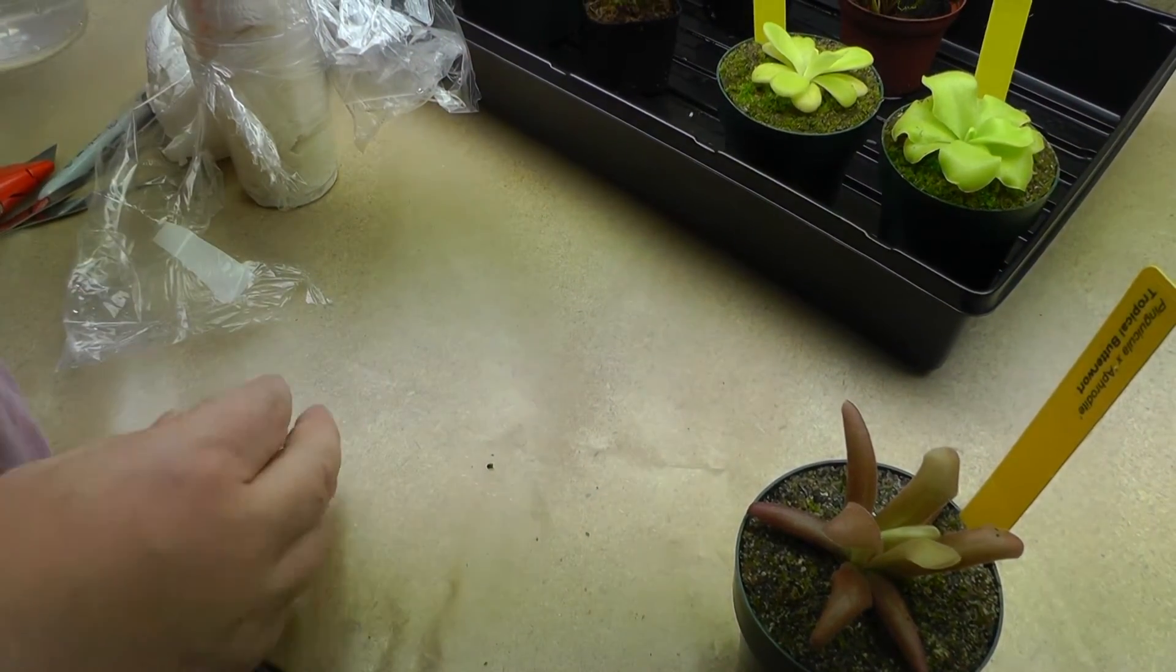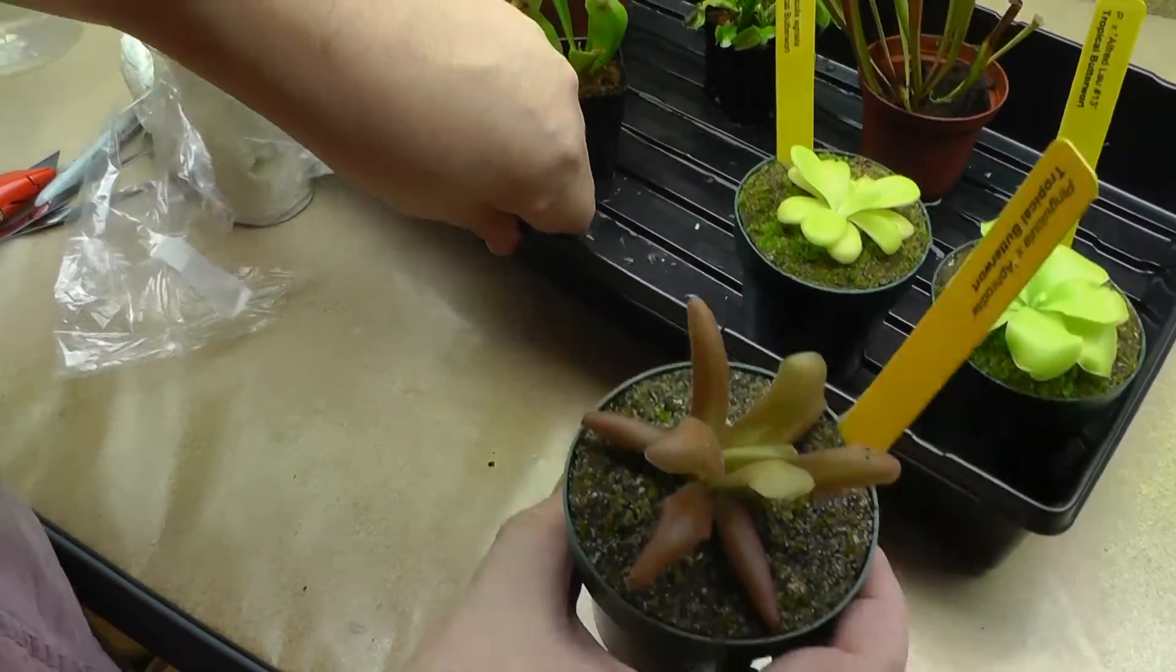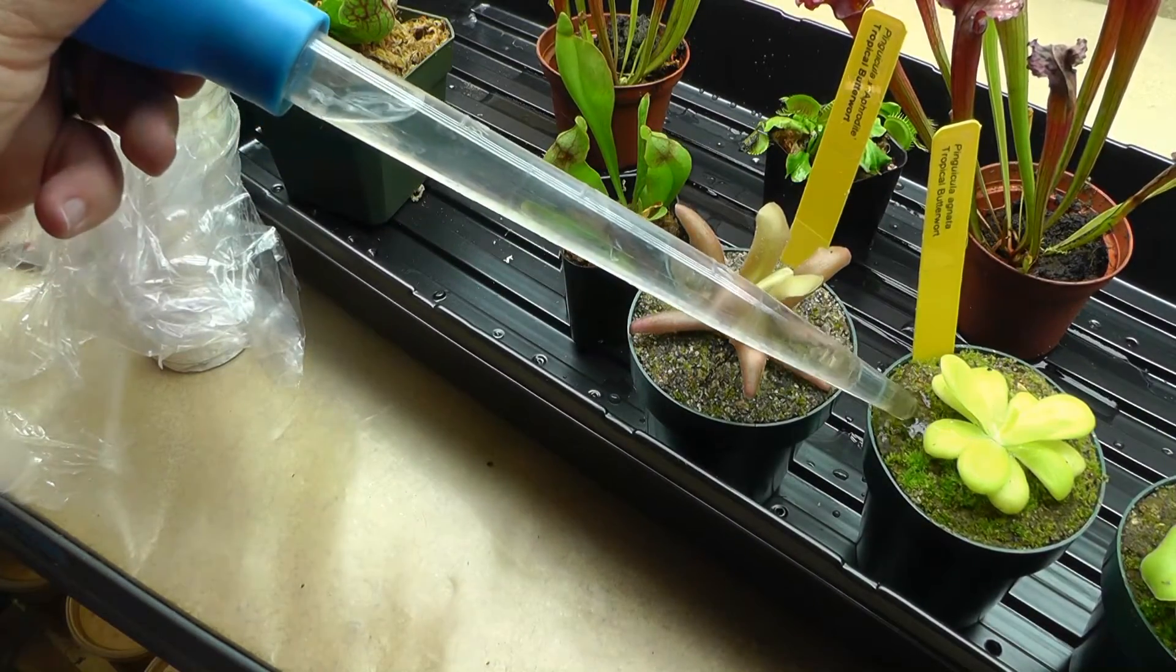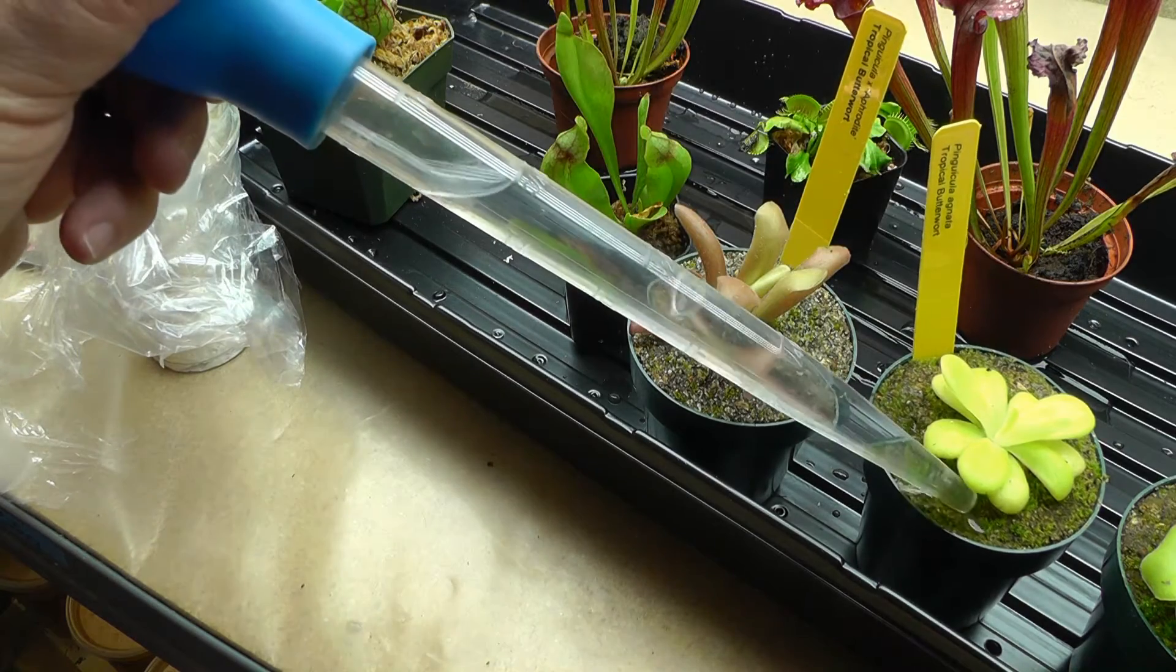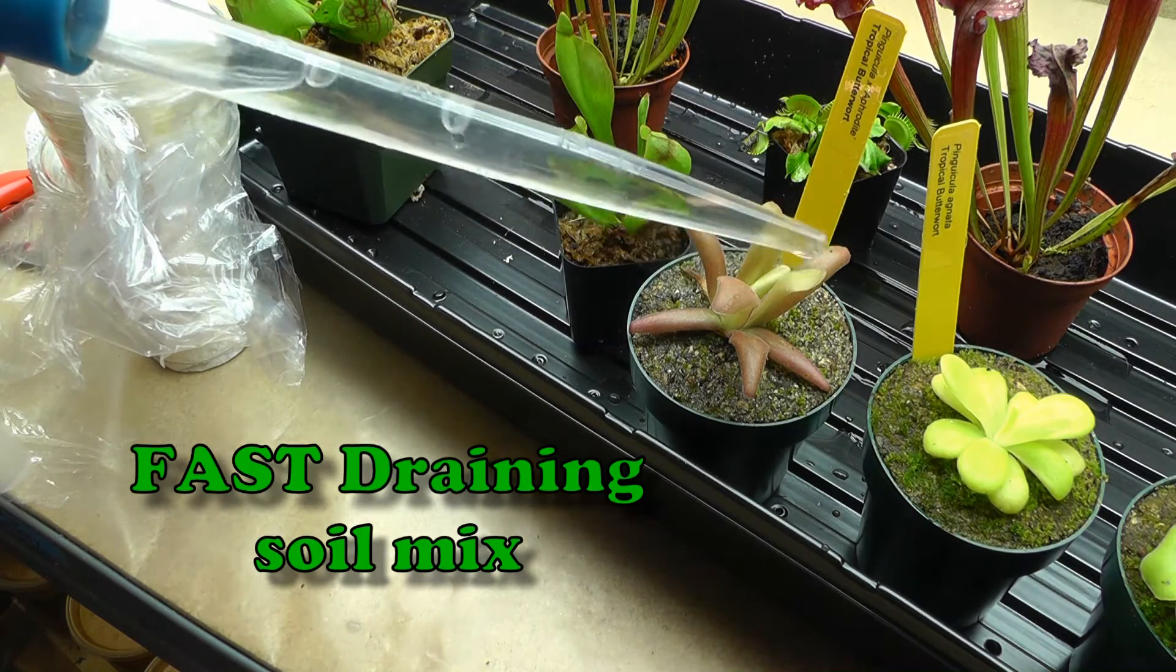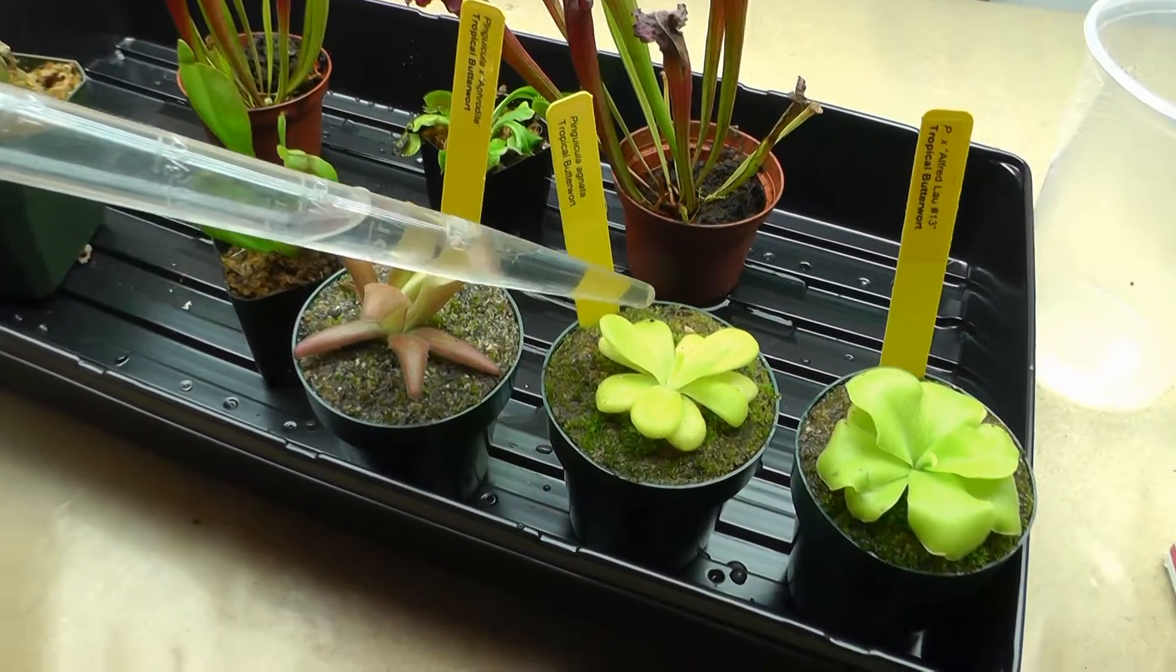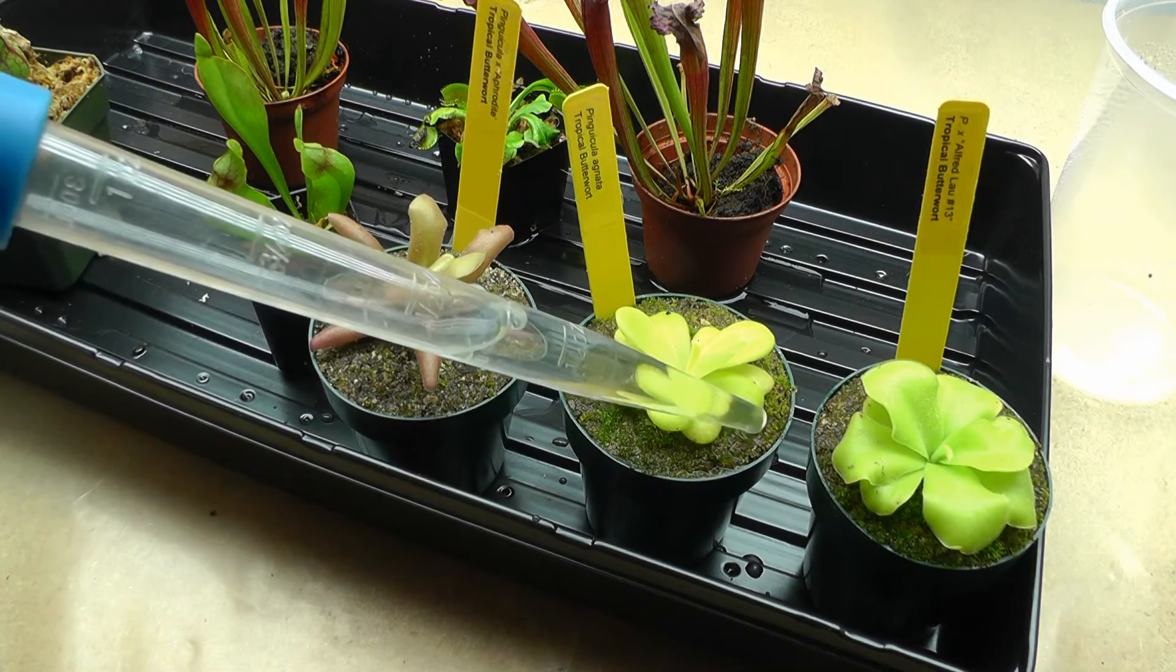And let's take one more look at all three of these. Remember, Pinguiculas like to be moist, but not super wet. Keep the soil moist until it's fast draining. I use 100% reverse osmosis water for all my carnivorous plants.